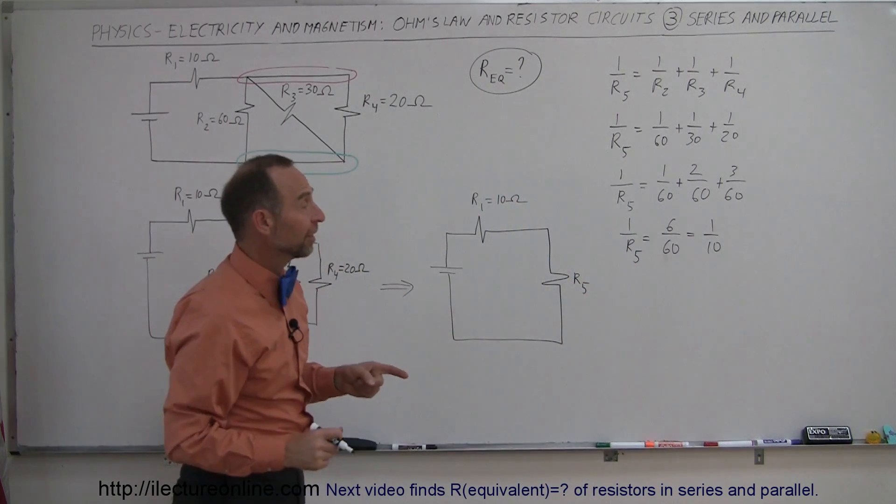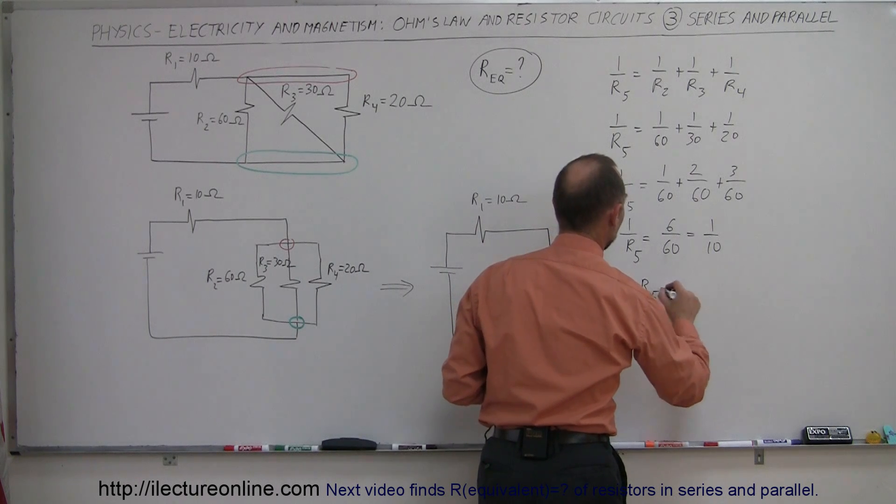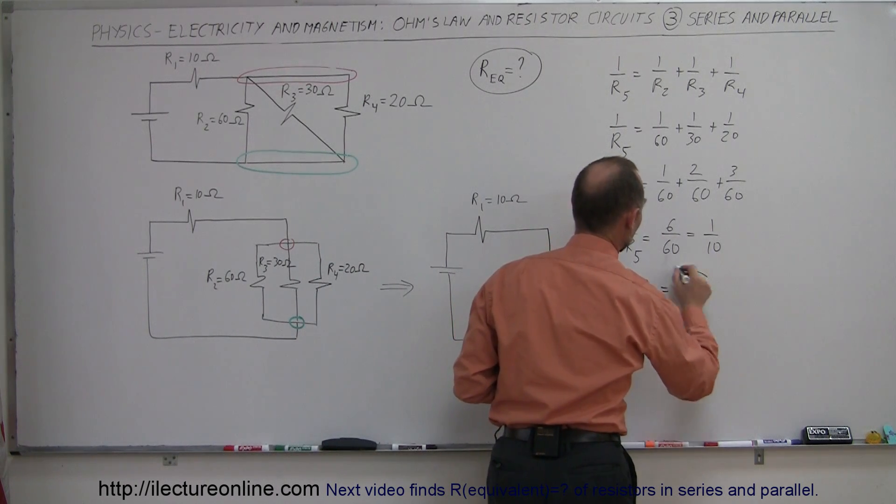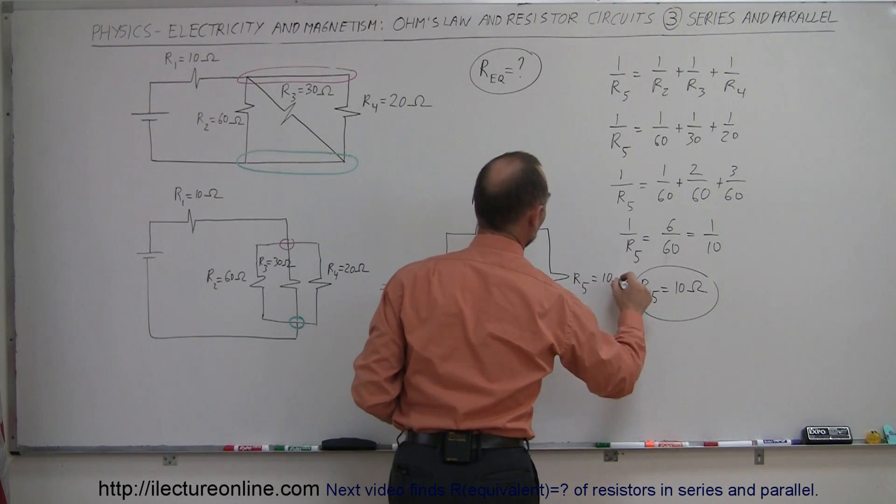So since 1 over R5 is equal to 1 over 10, we can then say that R5 equals 10 ohms. That's the equivalent resistance of those three right here, so we write it is equal to 10 ohms.